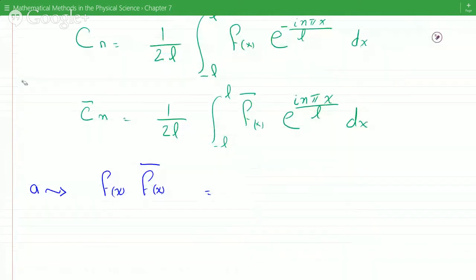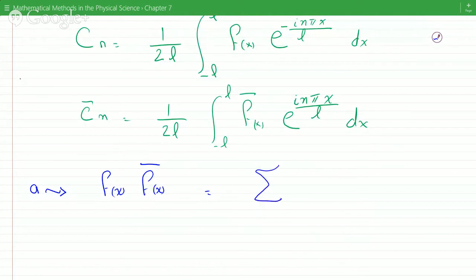And so that would be the summation of C_n e to the i n pi x over L times C_n times the complex conjugate of F of x. So that's F of x, not the complex conjugate.